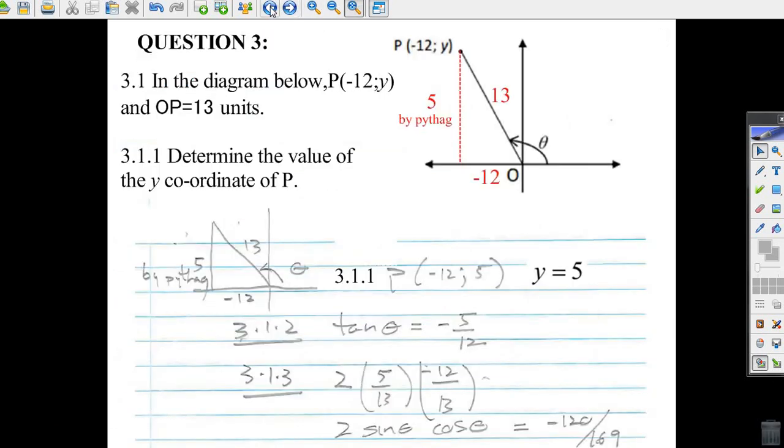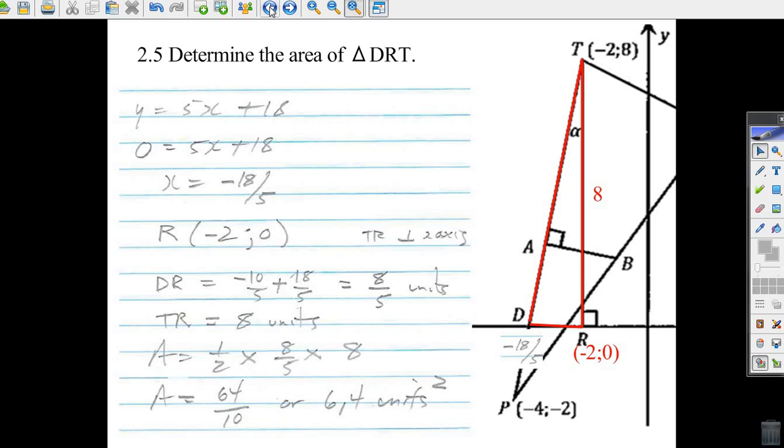Okay, let's try this last question here. It says determine the area of triangle DRT. We're going to have to figure out the area of this triangle. Well, we'd like to figure out the base and then times the height, and it'd be half the base times the height.